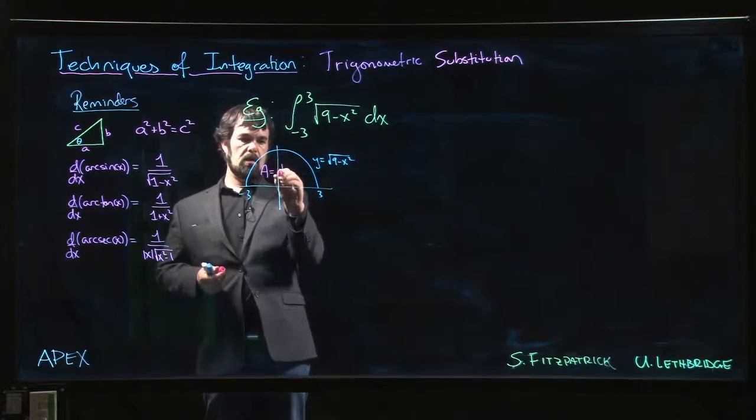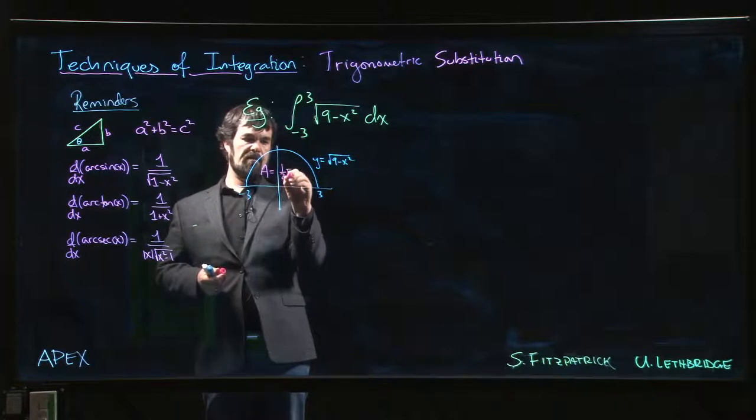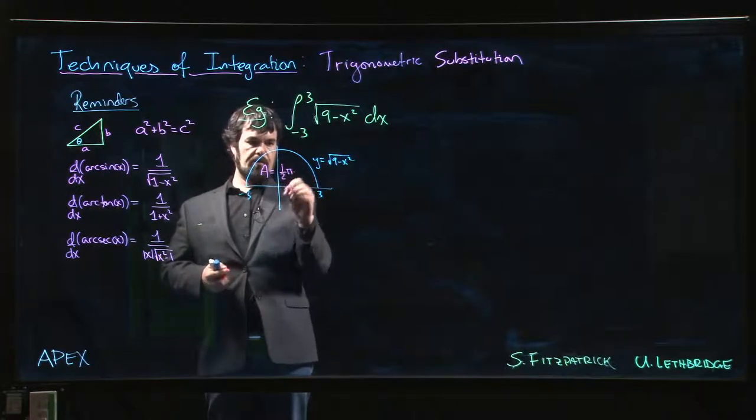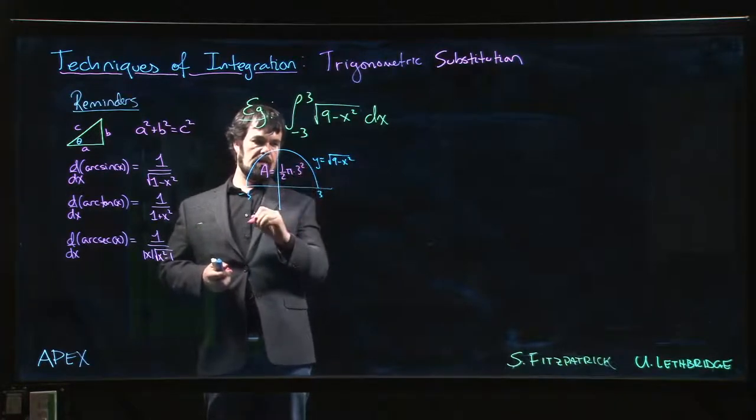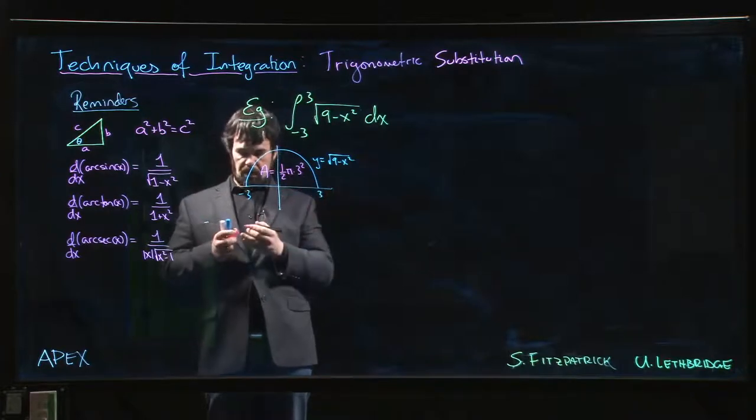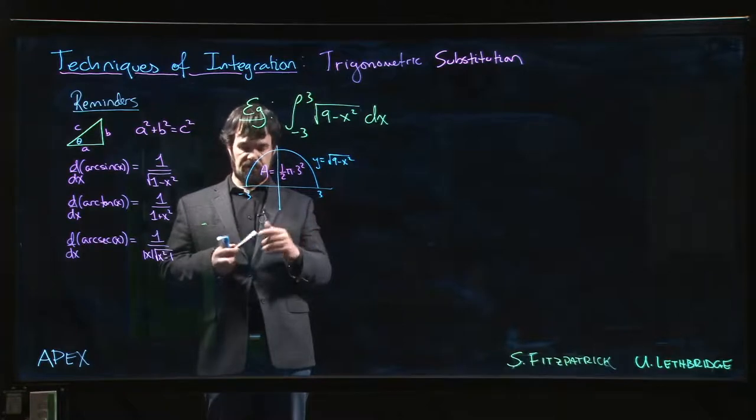The area should be, well it's half a circle, so 1 half pi r squared. So 1 half pi times 3 squared. So we expect that we should get an answer of 9 pi over 2. Let's see if we do.